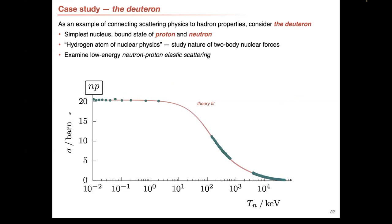If we look at low energy neutron-proton elastic scattering, it looks something like this. The blue points here are experimental data values. The red curve is a theory fit — a fit using a theoretical model for the reaction amplitude from which we can extract the properties I just mentioned. Some of the Python scripts I have do this fit and I'll show that in a moment.